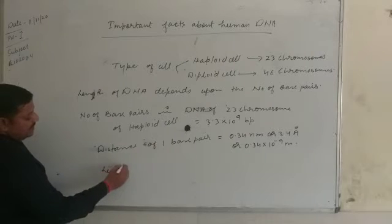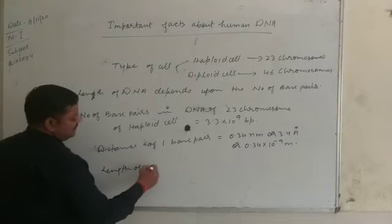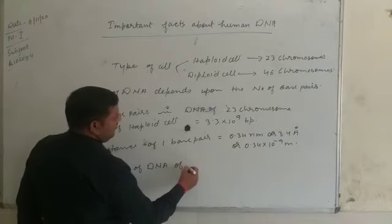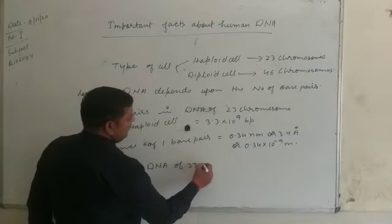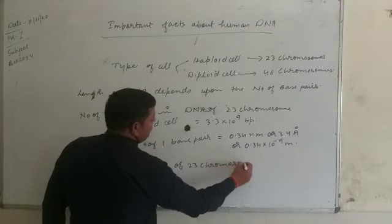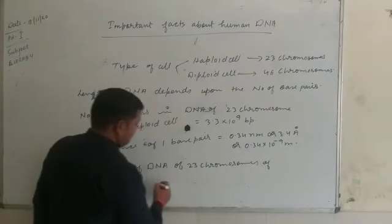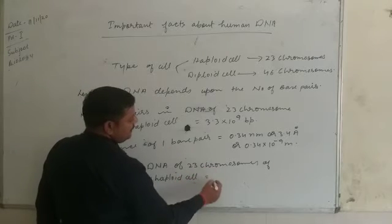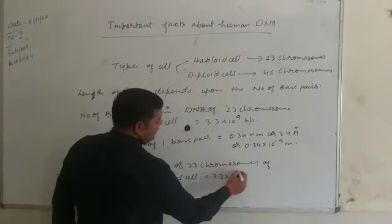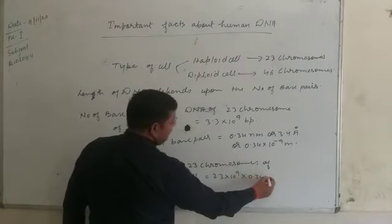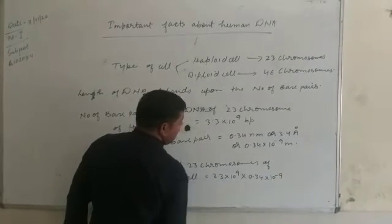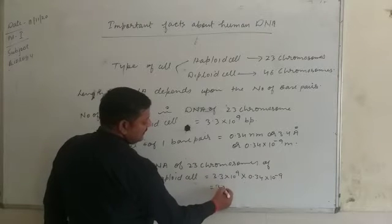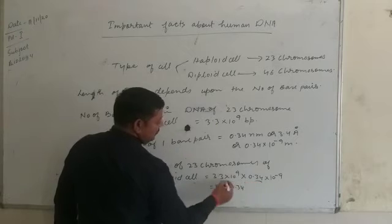So, the length of DNA of 23 chromosomes of the haploid cell is calculated as 3.3 × 10 to the power 9, multiplied by 0.34 × 10 to the power minus 9.